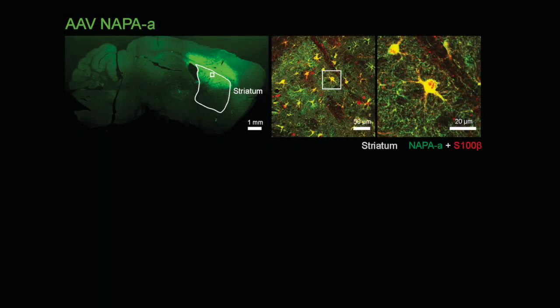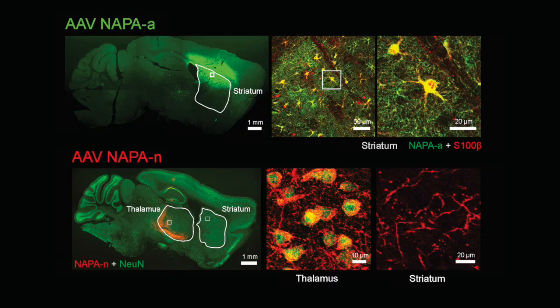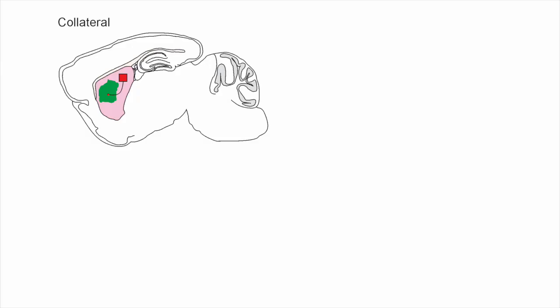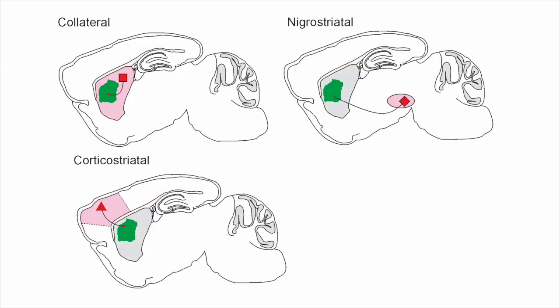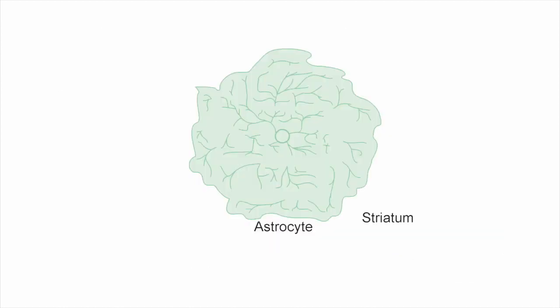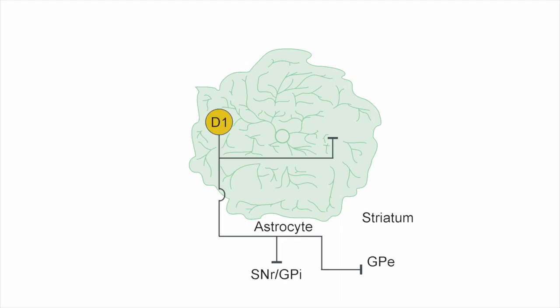Once we tested these constructs in cell cultures, we then generated AAVs that specifically express in astrocytes or neurons in vivo. We then used these AAVs to label astrocytes in the striatum, and through targeted microinjections, we interrogated individual neural inputs into the striatum. We assessed collateral, nigrostriatal, corticostriatal, and thalamostriatal projections and how they contact astrocyte processes. By using this NAPA method, we were then able to assess how striatal astrocytes wire with these neural inputs.